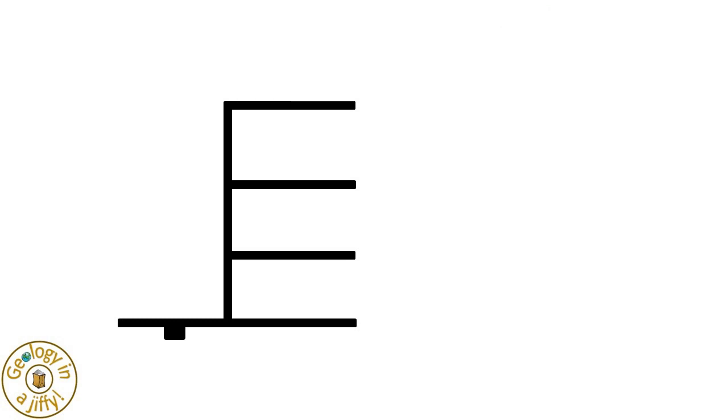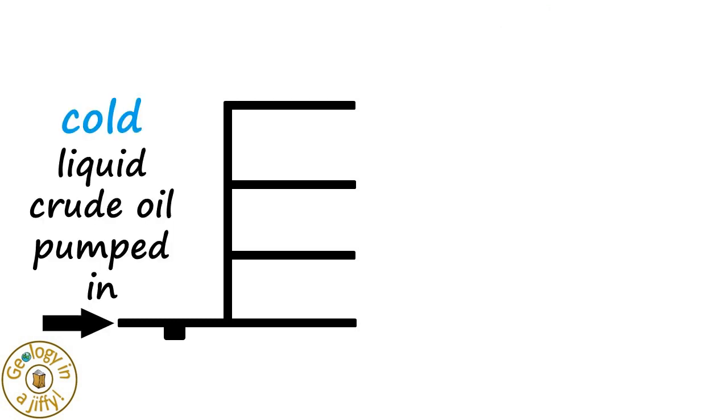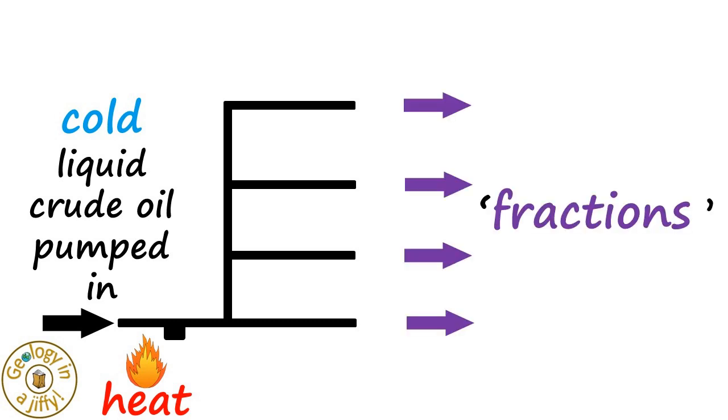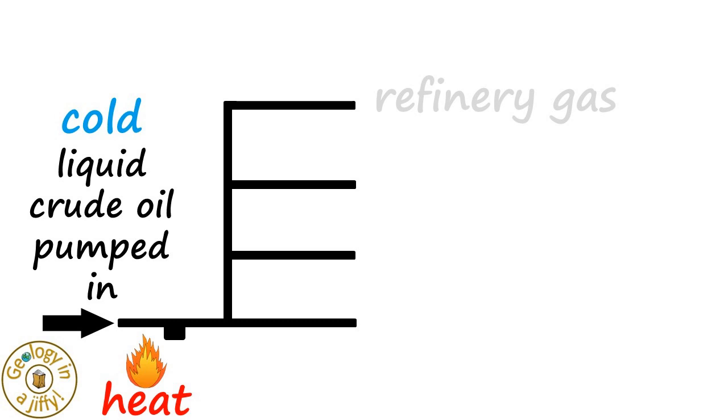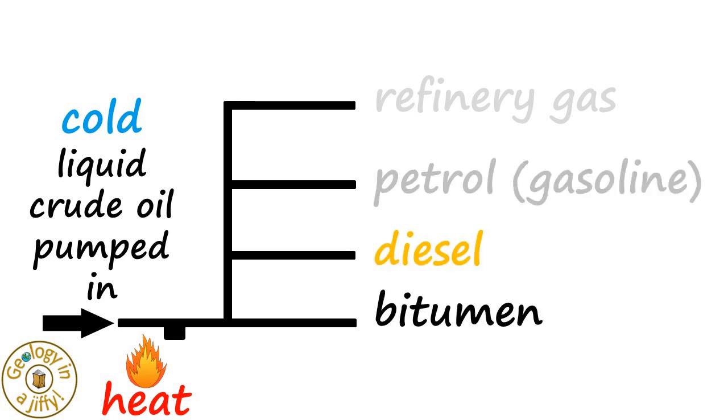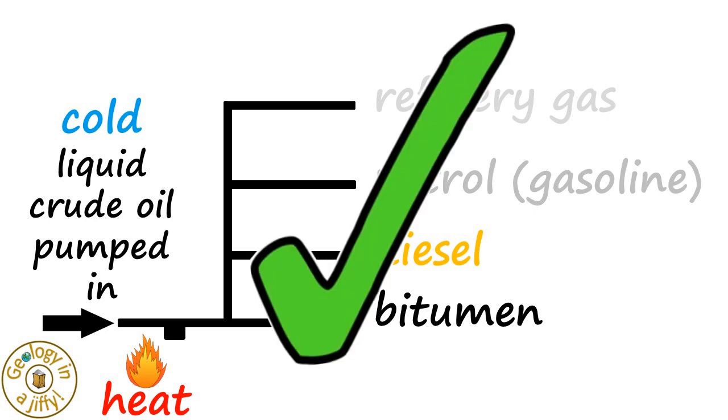With our outline into which cold liquid crude oil is pumped in and heated, we get fractions such as, starting at the cooler top, refinery gas, petrol or gasoline, diesel, and bitumen, which you all know from our previous videos.